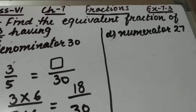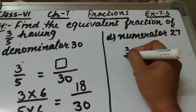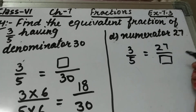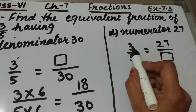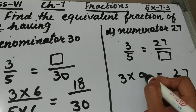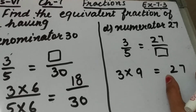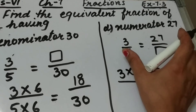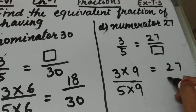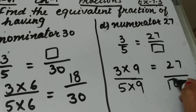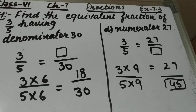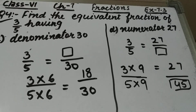Part d is: find the equivalent fraction of 3 by 5 having numerator 27. We have to find the denominator. By which number should I multiply 3 to get 27? If I multiply 3 by 9, I will get 27. As both fractions are equivalent, we multiply the denominator also by 9, and 5 times 9 is 45. So the equivalent fraction of 3 by 5 having numerator 27 is 27 upon 45. This is question number 4 of exercise 7.3. Thank you.